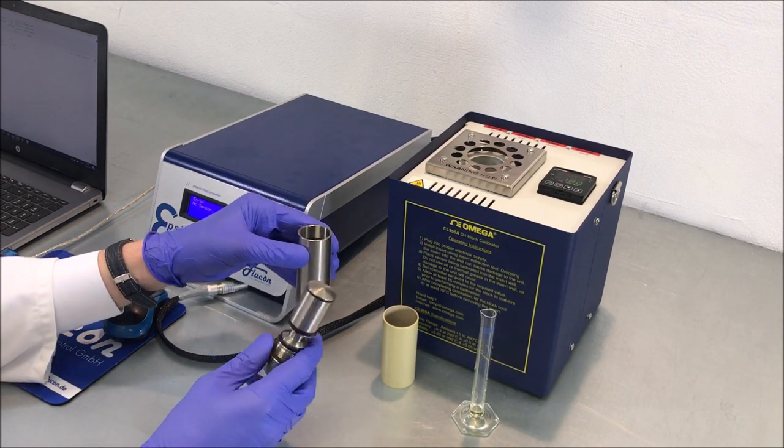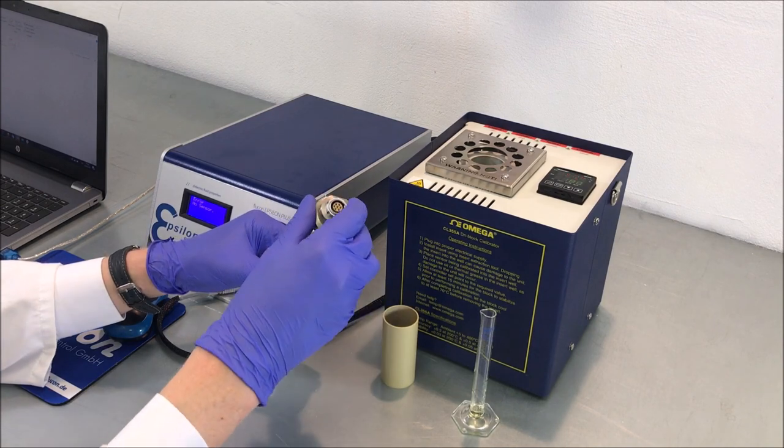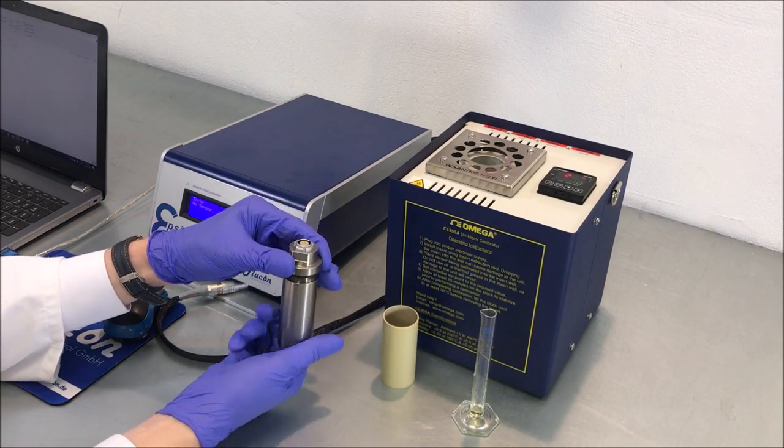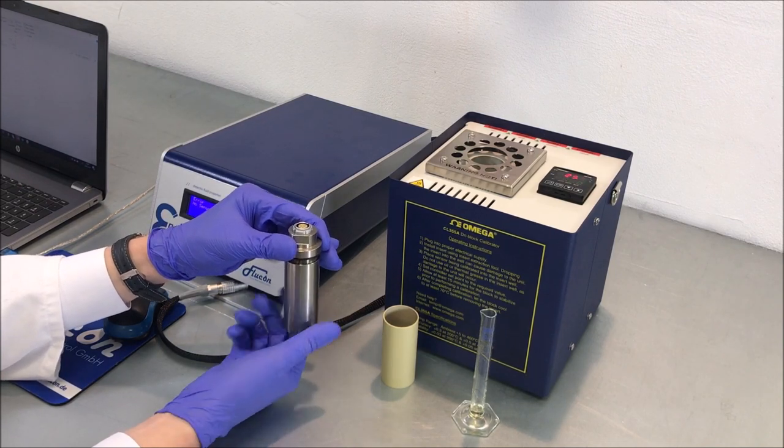Now grab your Epsilon Plus sensor head and immerse it gently into the sample. Screw on the cup with slow and steady turns.